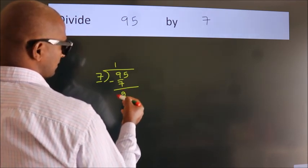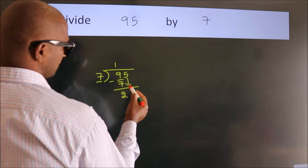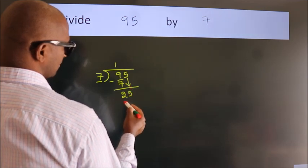After this, bring down the beside number. So, 5 down. So, 25.